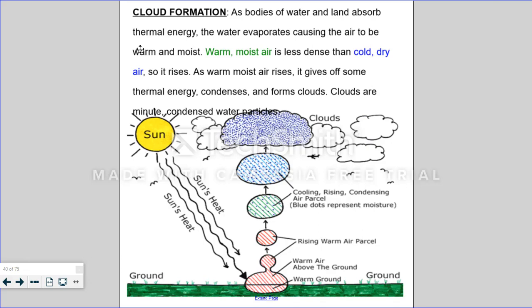Cloud formation. As bodies of water and land absorb thermal energy, the water evaporates. And it causes the air to be warm and moist. Warm moist air is less dense than cold dry air. So that warm air is going to rise. As the warm air rises it gives off that thermal energy that we saw in the previous graphic. It condenses and it forms clouds. So clouds are very minute condensed water particles. That's all they are.